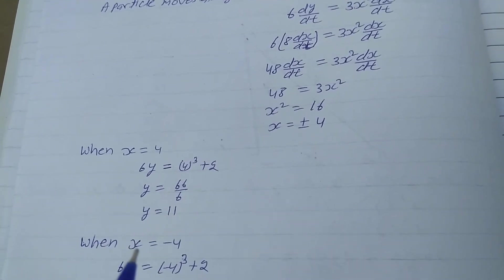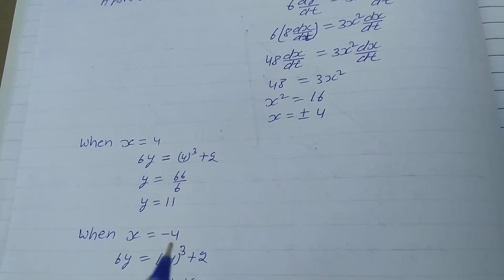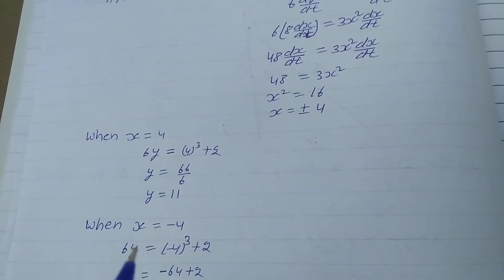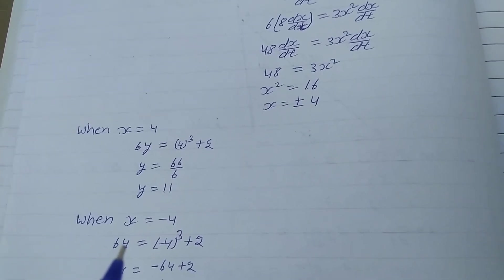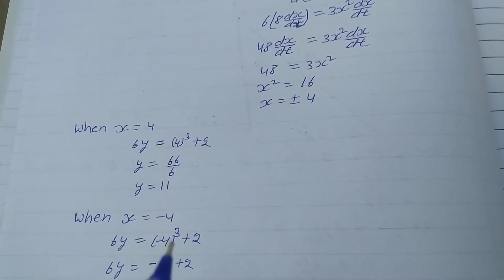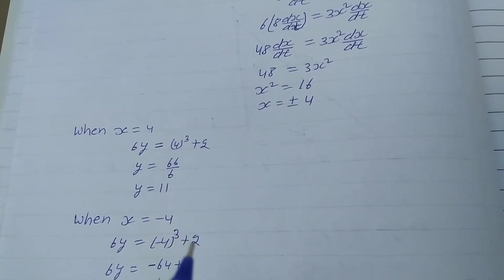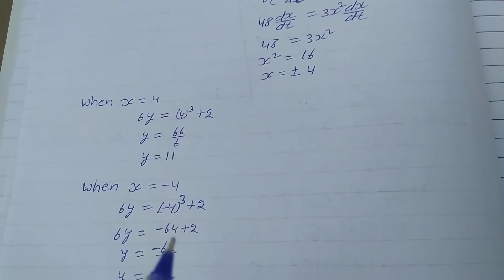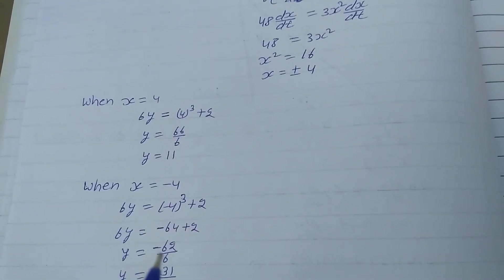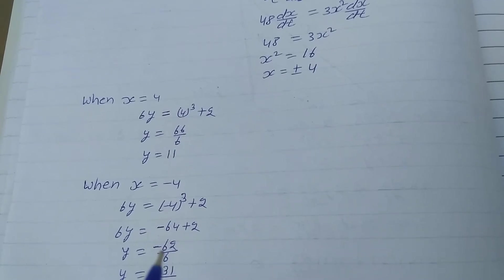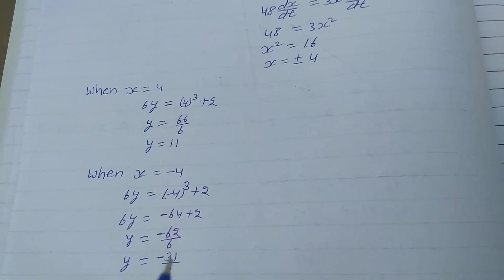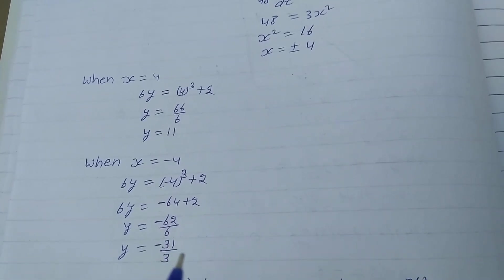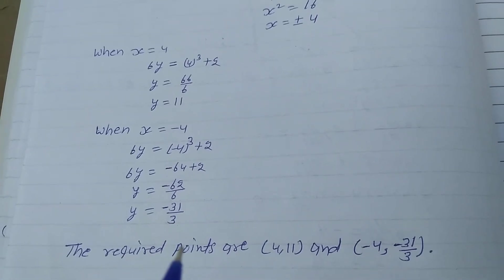When x equals minus 4, put the value in the curve. So 6y is equal to minus 4 cubed plus 2. So 6y is equal to minus 64 plus 2, so y is equal to minus 62. Remaining is minus 62, so minus 62 by 6, so y is equal to minus 31/3.